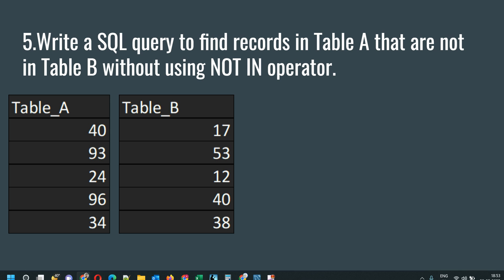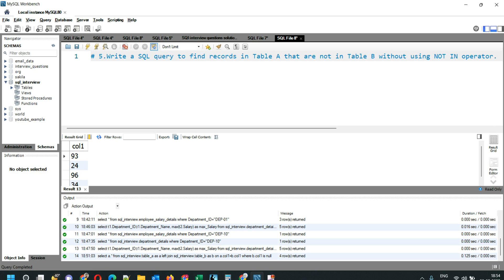There can be multiple records present in table A that are also present in table B, but there are a few unique records which are present in table A but not in table B. We have to find all of those unique records. We will use two options: first, using joins, and second, using NOT EXISTS. Let's go to our SQL workspace.